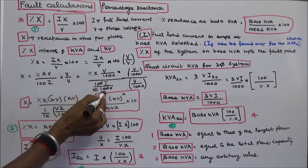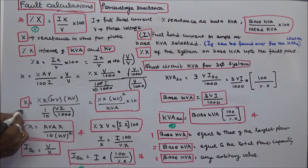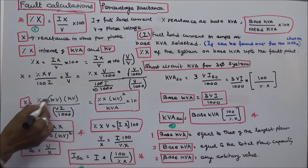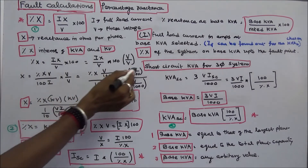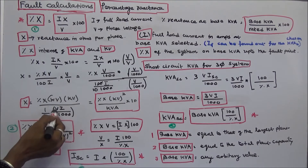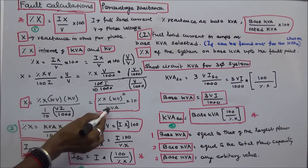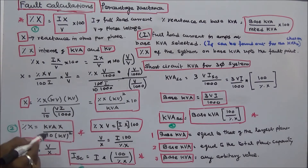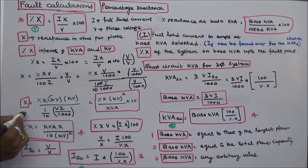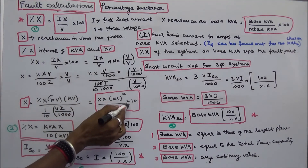Since 100 divided by 1000 equals 1 over 10, reactance in ohms per phase equals percentage X times KV times KV divided by 10 times KVA. Therefore, X equals percentage X times KV squared divided by KVA times 10, and percentage reactance equals KVA times X divided by 10 times KV squared.